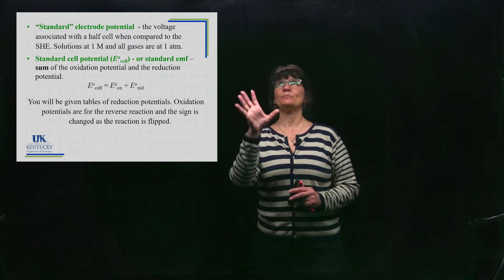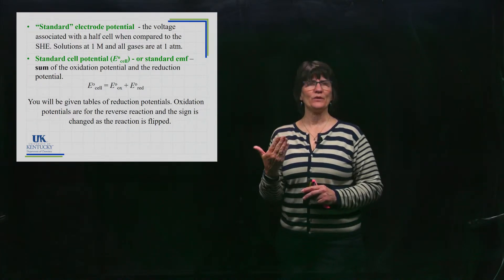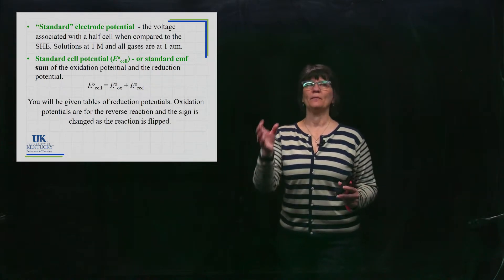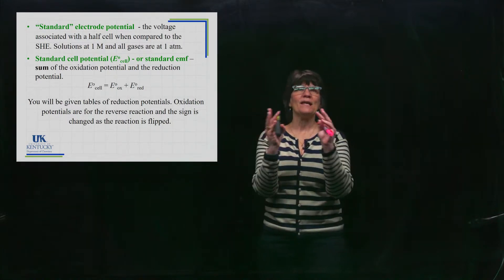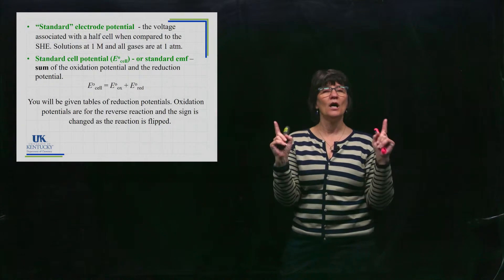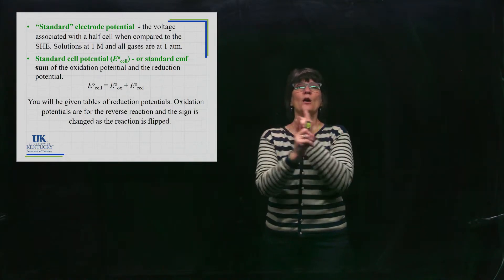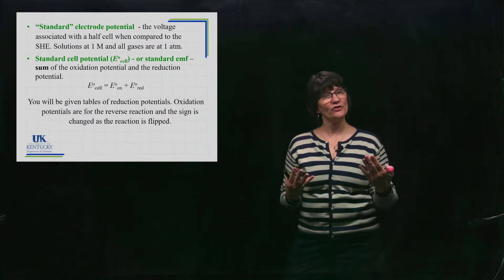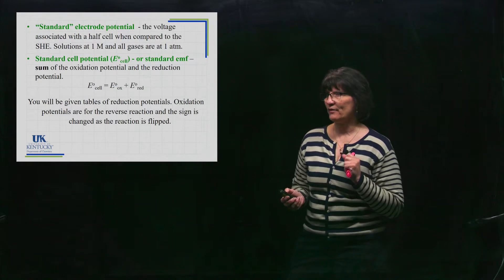What we'll give you, and this will always be the case in this class, is that these are reported as reduction potentials. It could be that you run across a table of oxidation potentials, but that's not very common. Usually it's reduction potentials—they write them all as reduction reactions. So if you're reading a table with reduction reactions and you flip the reaction, it becomes an oxidation. When you flip the reaction, you change the sign of that half-cell potential, so it's easy to get an oxidation potential from those tables.